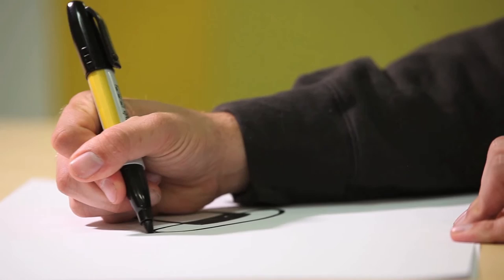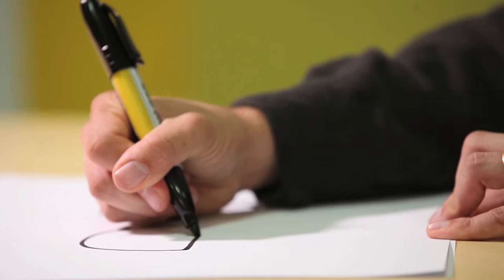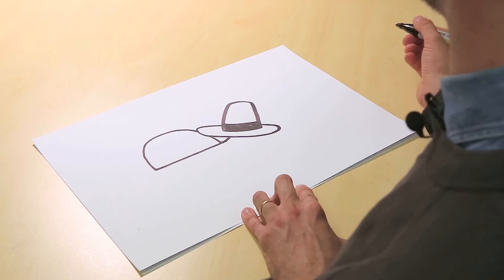Then the turtle shell starts kind of here. And you draw across. And there's the turtle's neck, just starting.